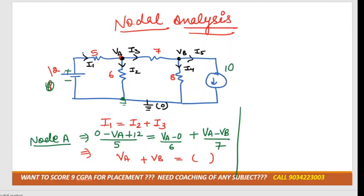See, I1 is flowing from which node to which node? It is flowing from 0 to Va. So it would be 0 minus Va divided by the resistance. We'll see according to node to node only.